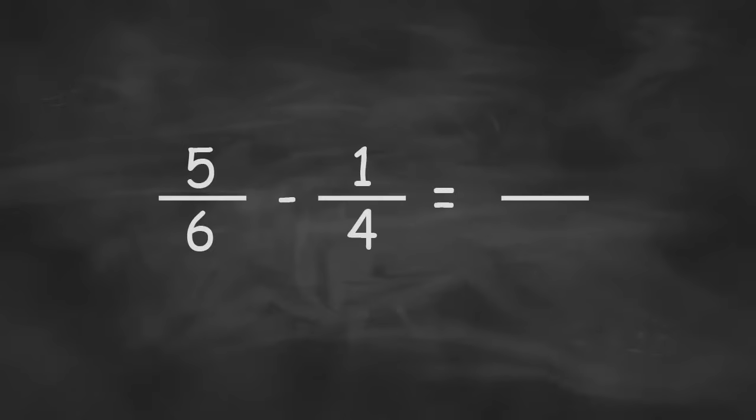Now it's not always that easy. We can use this same method, but just make sure that when you get your answer, it's in its simplest form. Take, for example, 5 sixths minus 1 quarter. Now we're going to do the same exact technique. We're going to multiply across the bottom. So 6 times 4 gives us 24.